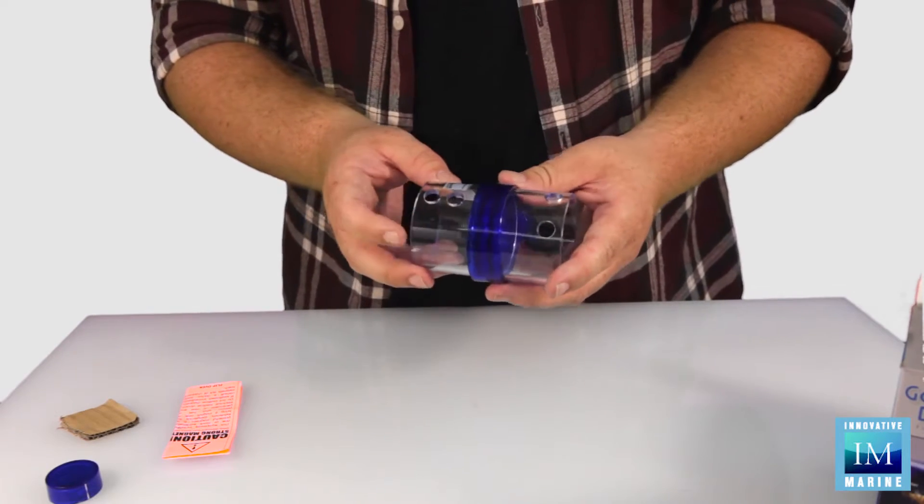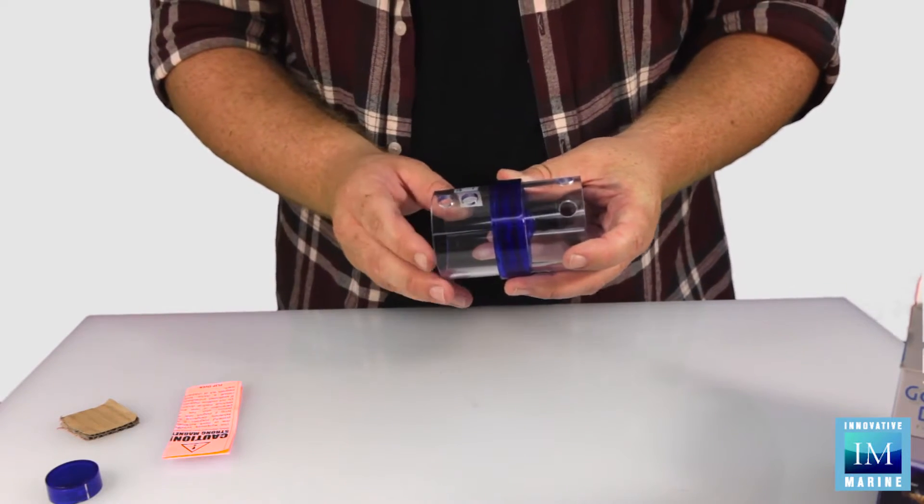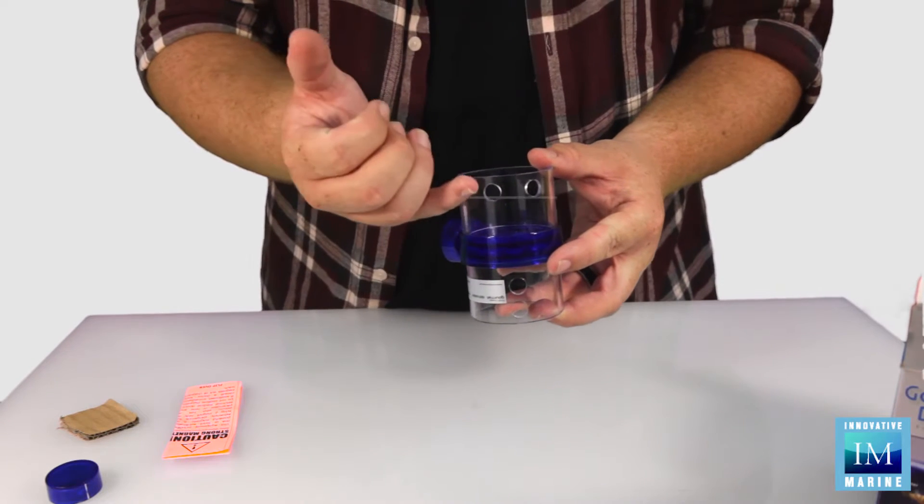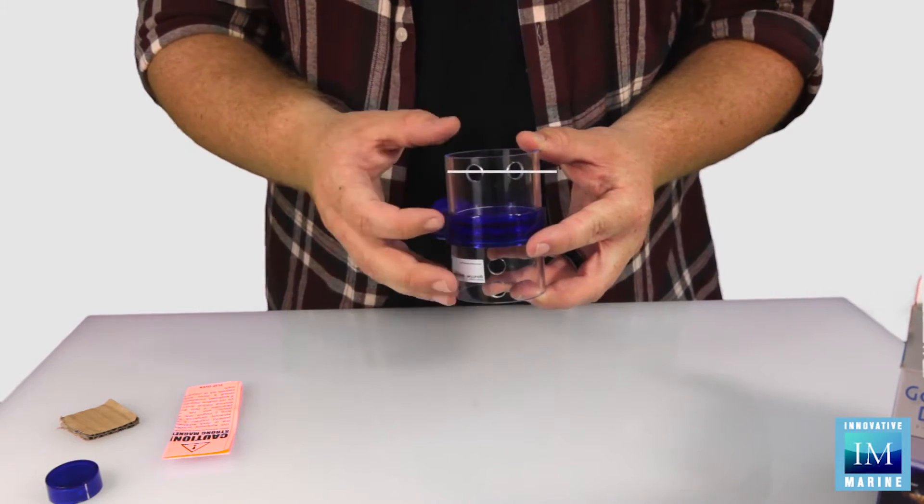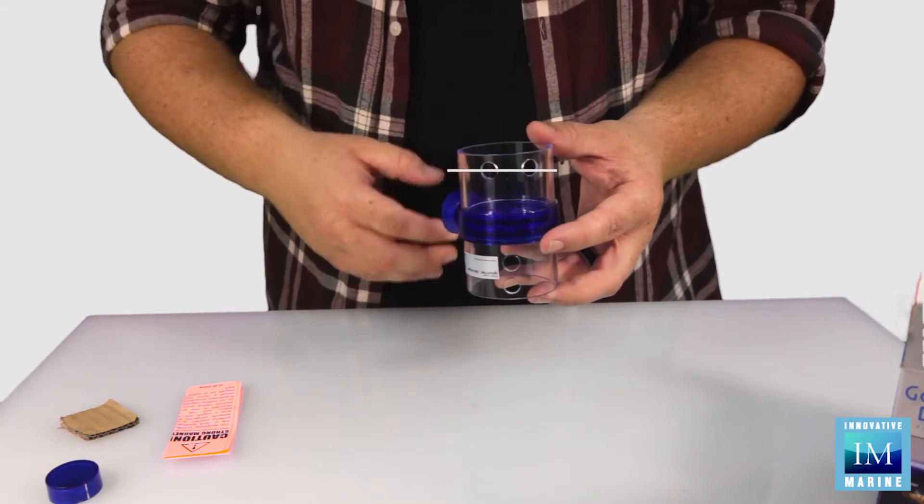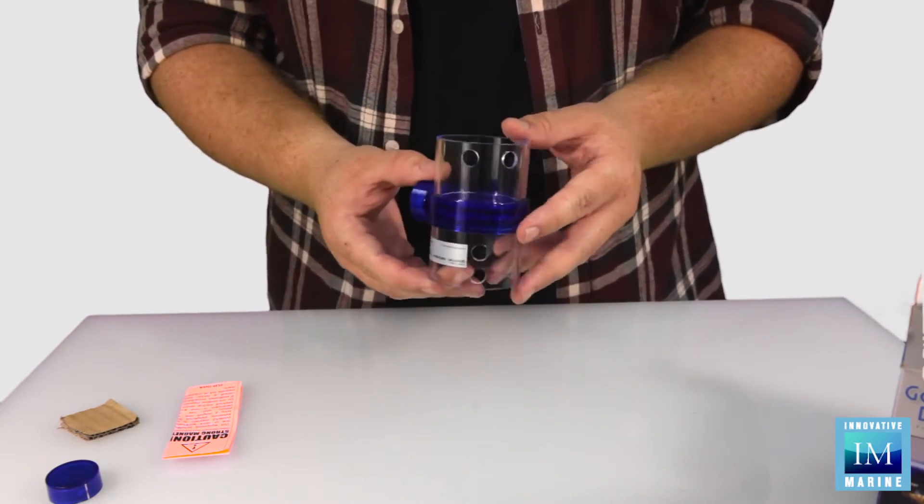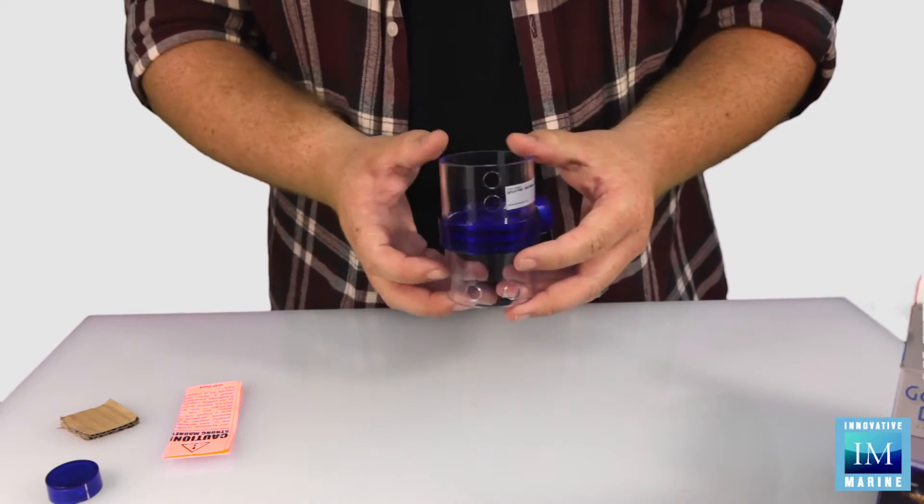But the most important part of the gourmet defroster are the flow boards. There are two different settings you can use. For this setting, you want the water line to hit about right here. This allows the water to cascade into the cup, hitting the food and tumbling it, ultimately defrosting it. This setting is used for gelatin-bound foods.